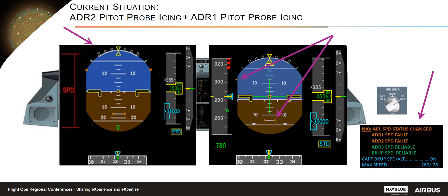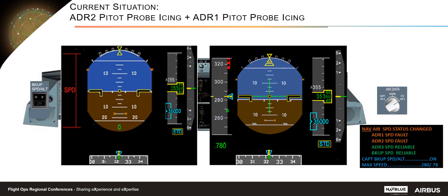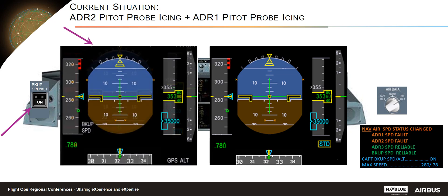An ECAM alert is triggered again and new actions are recommended. Here, you will use the backup speed altitude push button on the captain's side. Consequently, max speed is limited, and PFD1 display recovers with the backup speed. Note also that there is no longer a consideration of flight level 250 when using the digital backup speed. The monitoring is reversible, and there is no more need to switch off ADRs.